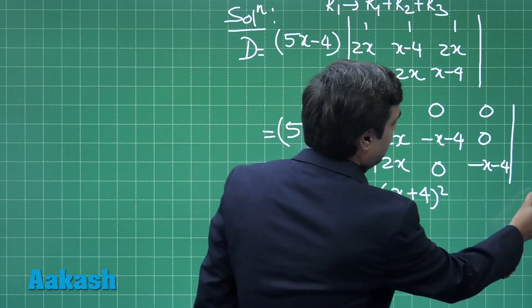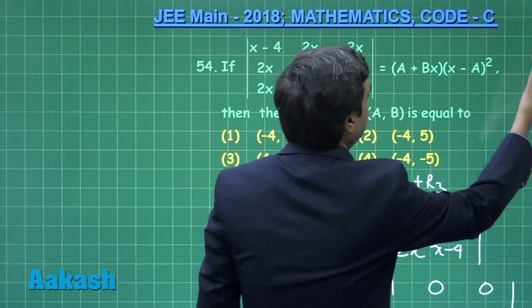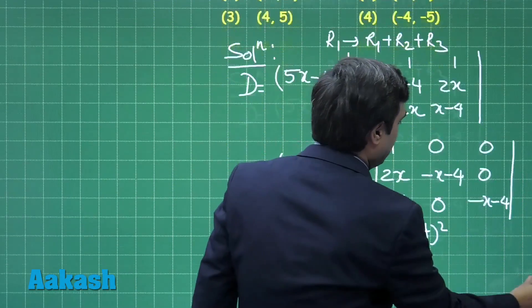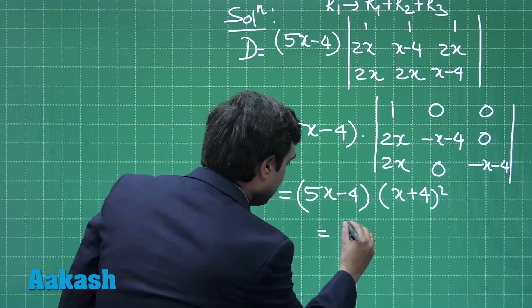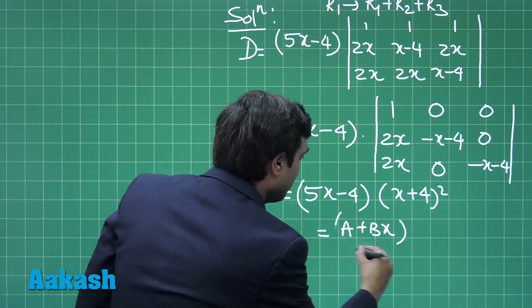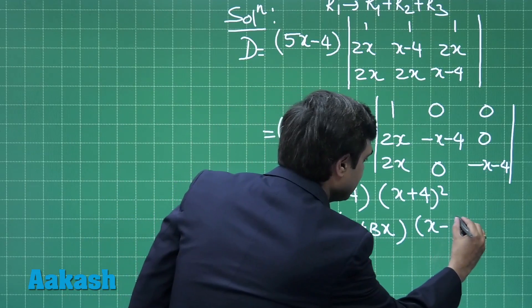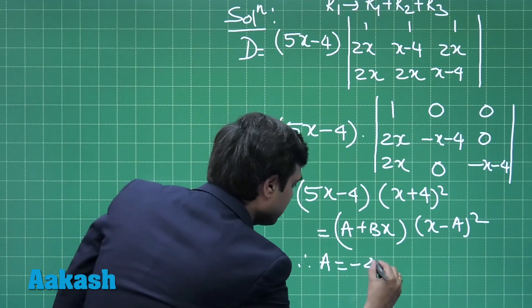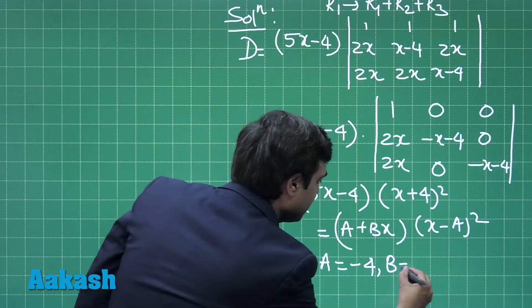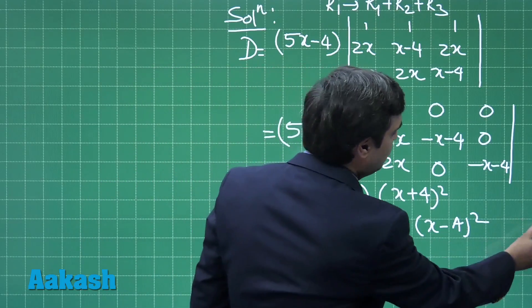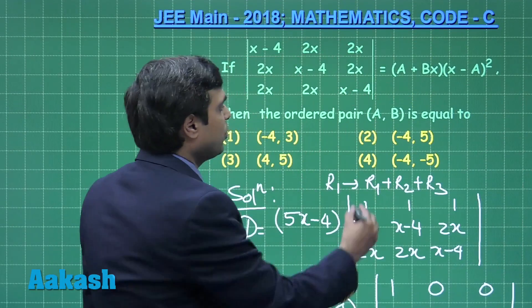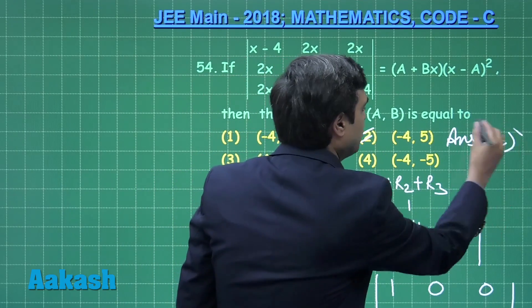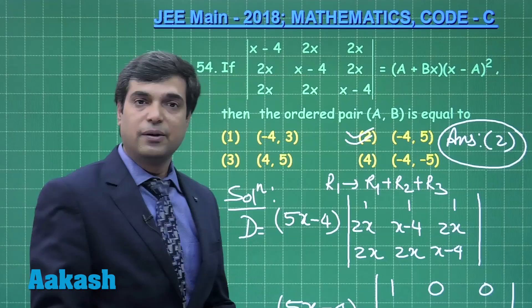Comparing with the given right-hand side (a + bx)(x − a)², we get a = −4 and b = 5. From the given options, the correct answer is (−4, 5), which is option number 2.